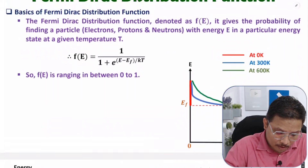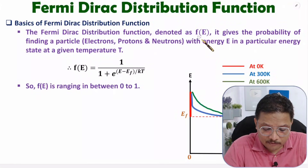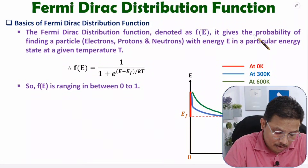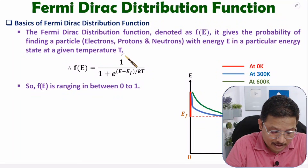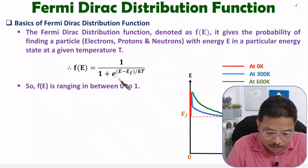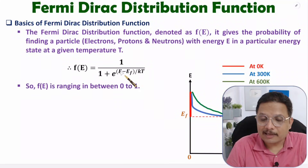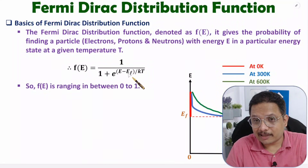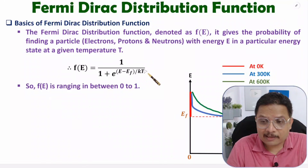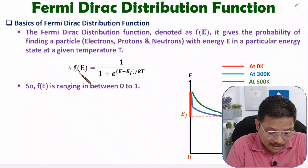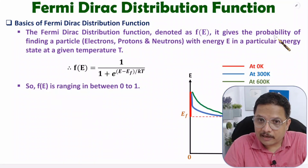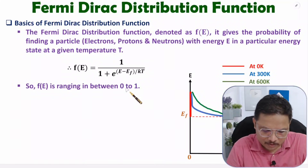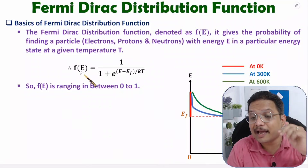The Fermi-Dirac distribution function F(E) gives the probability of finding electrons with a given energy state at a particular temperature. The formula is: F(E) = 1 / (1 + e^((E − EF) / kT)), where E is the energy at which we want to find the probability, EF is the Fermi level energy, k is Boltzmann's constant, and T is temperature in Kelvin. Since F(E) is a probability, it ranges from 0 to 1.